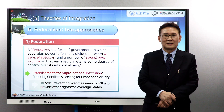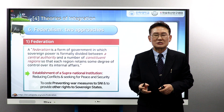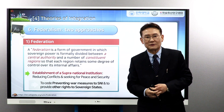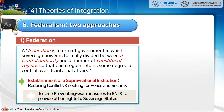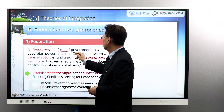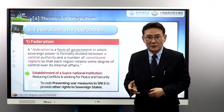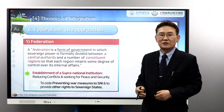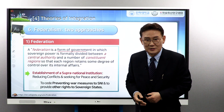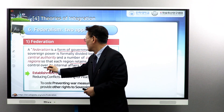In this section, I'm going to explain how to achieve a Federalist State. There are two approaches in order to achieve Federalism. Federation is a form of government in which sovereign power is formally divided between a central authority, like the American government in Washington D.C., and a number of constituent regions — about 50 state governments. Each region retains some degree of control over its internal affairs.